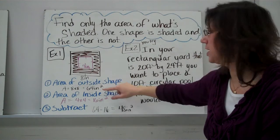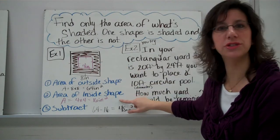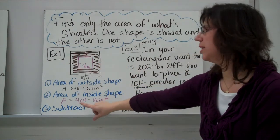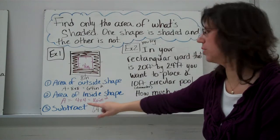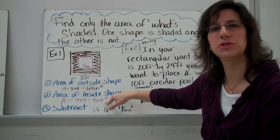Find the area of the inside shape. In this case, the inside shape is also a square. So, we would do, again, side times side, or 4 times 4, giving you 16 inches squared.